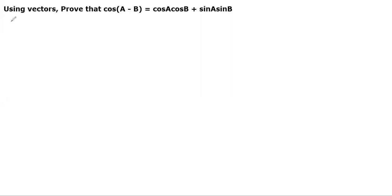In this video, we are going to discuss proof of cos(A - B) = cosAcosB + sinAsinB using vectors.